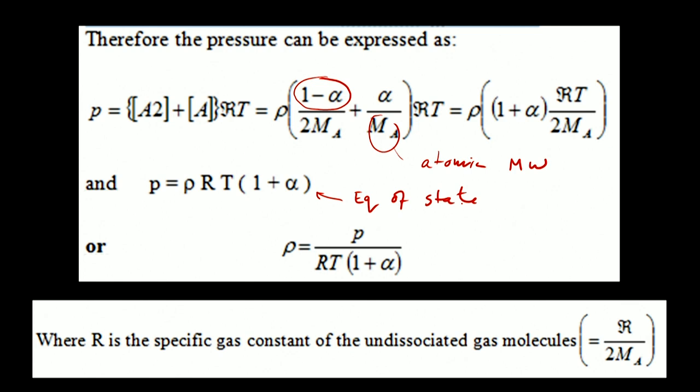So the things that affect the density are the amount of dissociation that's taken place.